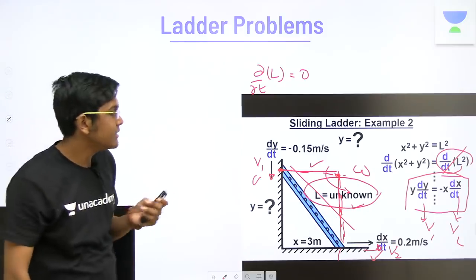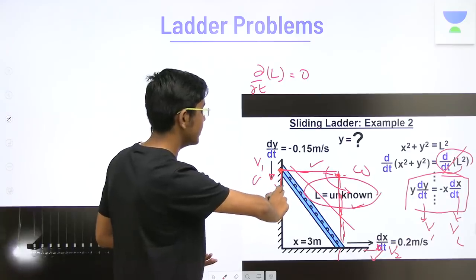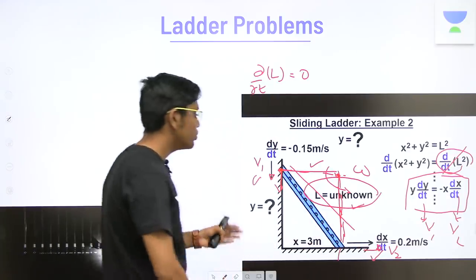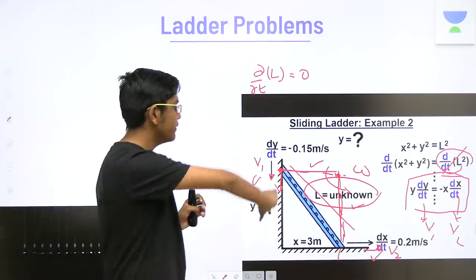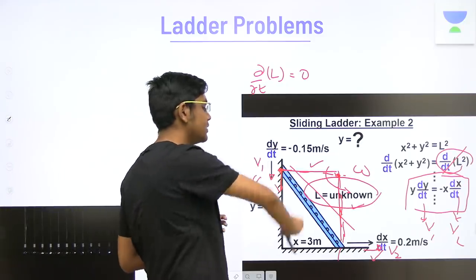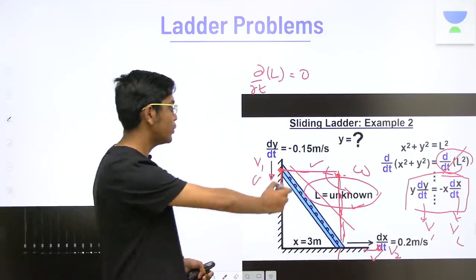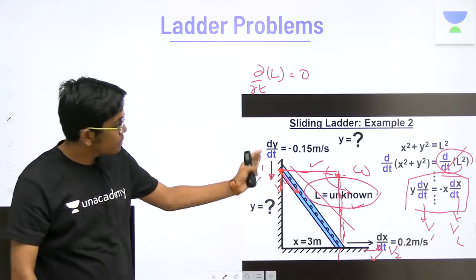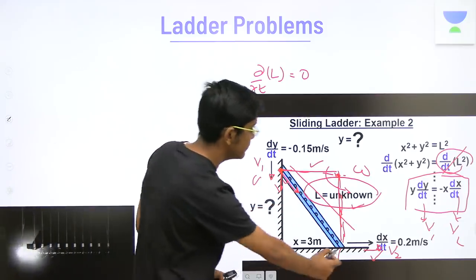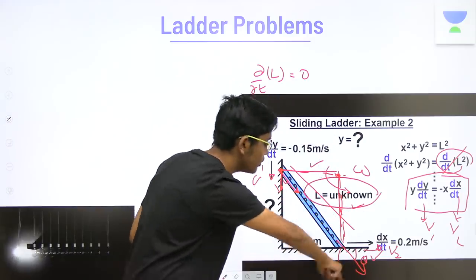The third method is of constraint relation. There's a v1 here and a v2 here, but we know that the stick does not expand or contract. Therefore, the components of velocity along the stick should be equal and opposite. Therefore, v1 into cos of this angle is the component of v1 along the stick.